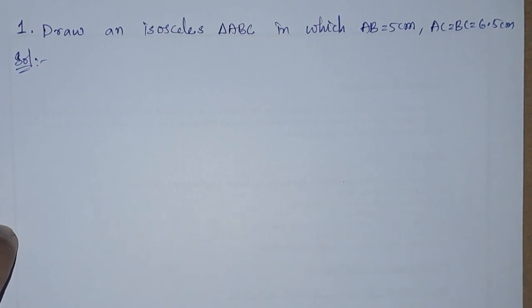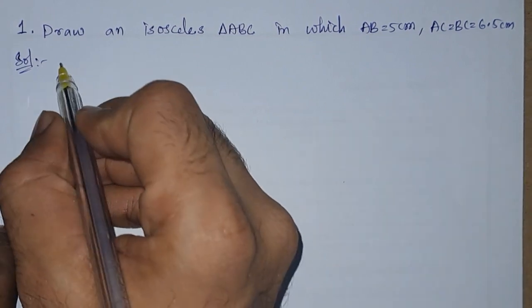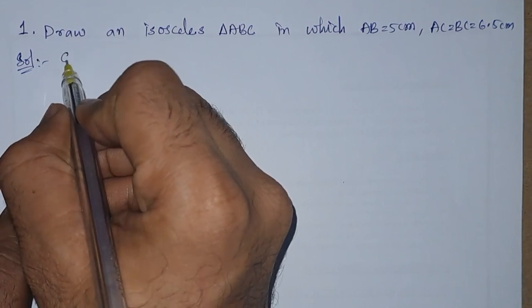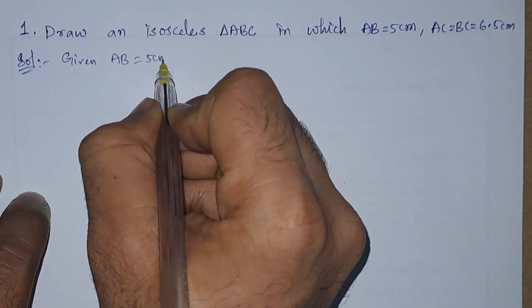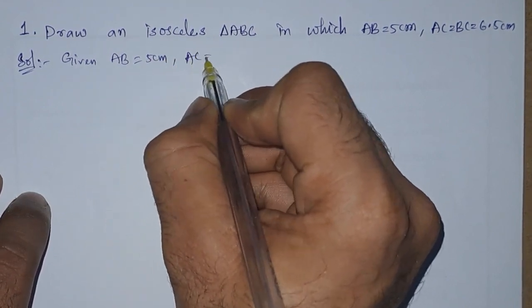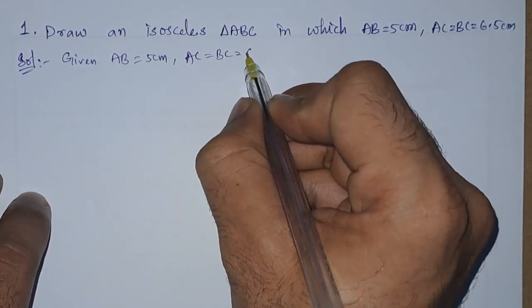two sides will be equal. So here, first of all, I will write down the given dimensions. Given: AB equals 5 centimeters, and AC equals BC equals 6